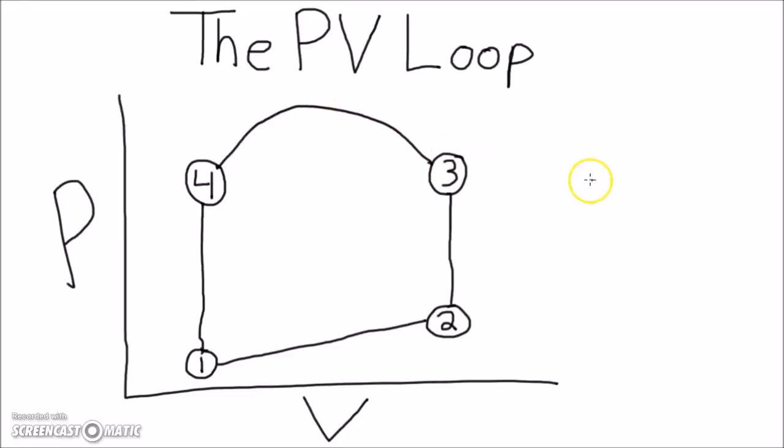Upon physical examination of a patient, you discover that they have a diastolic murmur. At what point on the graph does the affected valve open? 1, 2, 3, or 4?